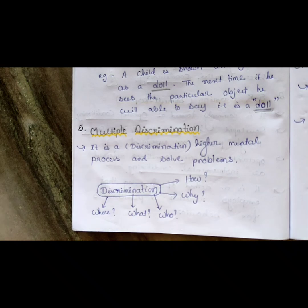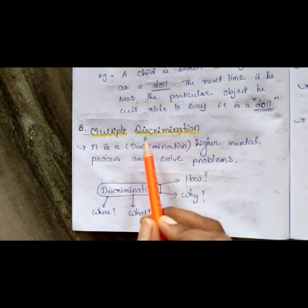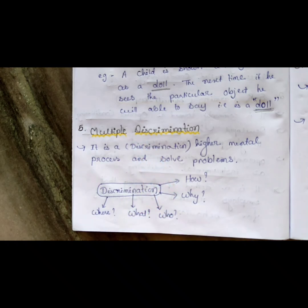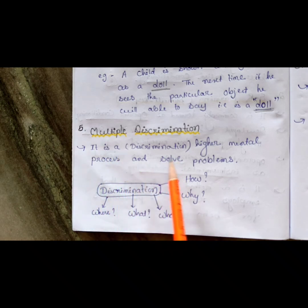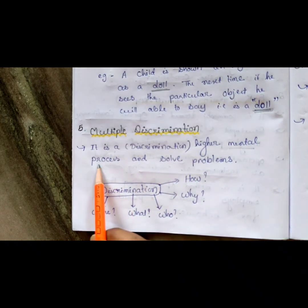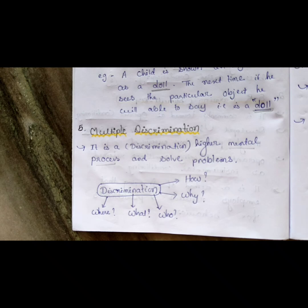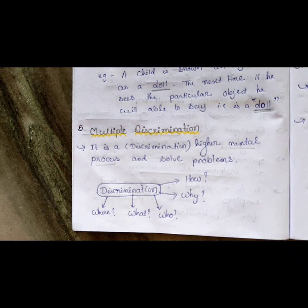The fifth type is multiple discrimination. Discrimination means to differentiate between things. Multiple discrimination is a higher mental process. It involves differentiating among many things — asking how, why, who, what, where — in order to distinguish one thing from another.